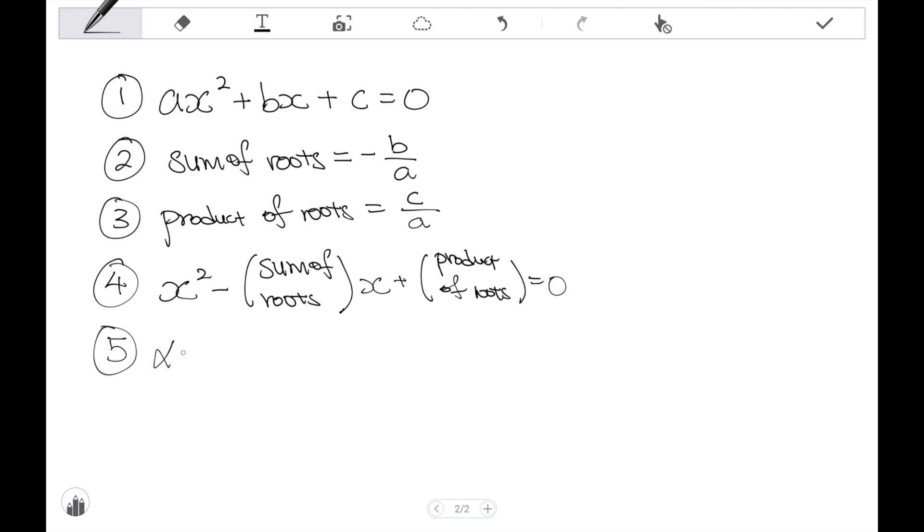And the fifth, a very useful formula, is that alpha squared plus beta squared equal to alpha plus beta bracket squared minus 2 alpha beta. So we will be using these five formulas as we go along in this question.